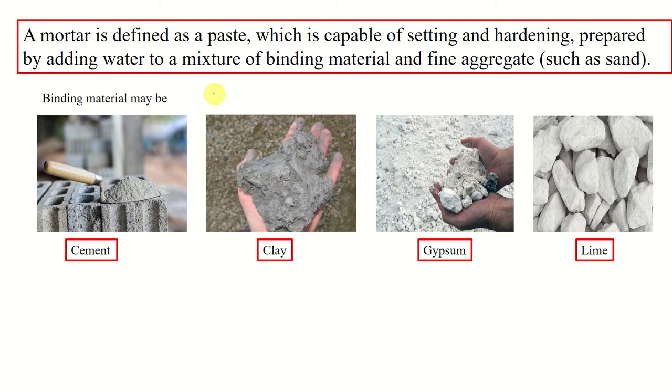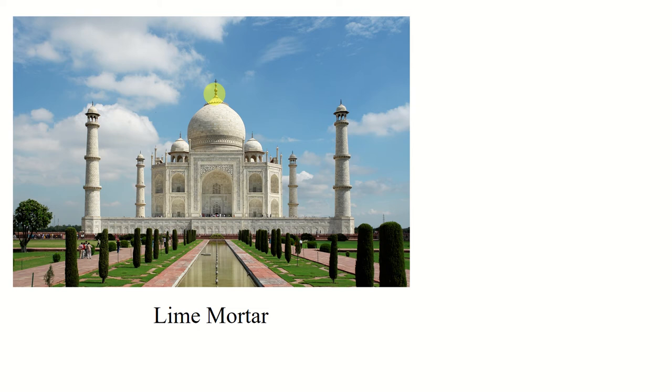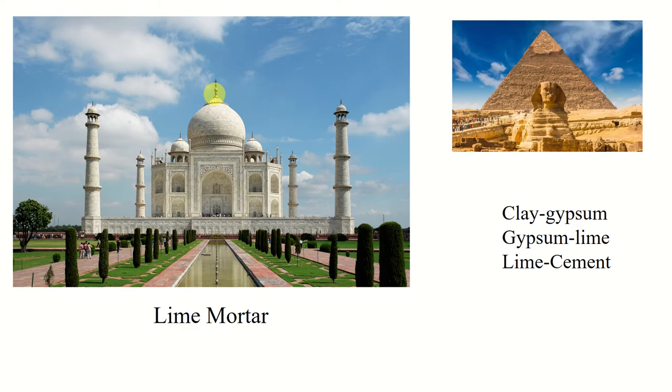Let me show you a famous monument which was constructed using mortar as an ingredient. One of the mortars used was lime mortar, and for the Egypt pyramids, a combination of clay gypsum, gypsum lime, and lime cement mortars were used.